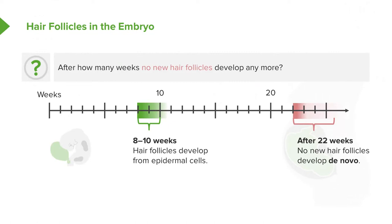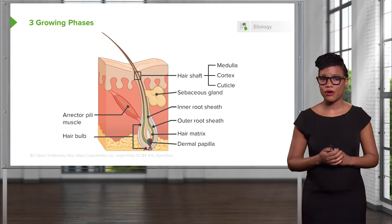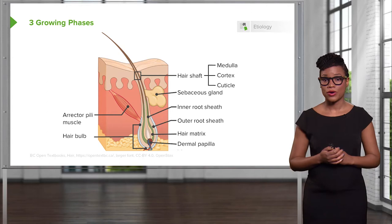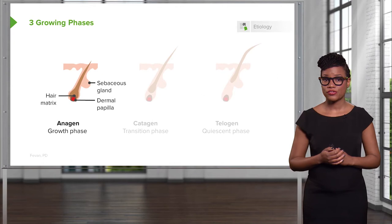There are three growing phases of the hair follicle. The three growing phases are: anagen, the growth phase; catagen, the transition phase; and telogen, the quiescent phase.